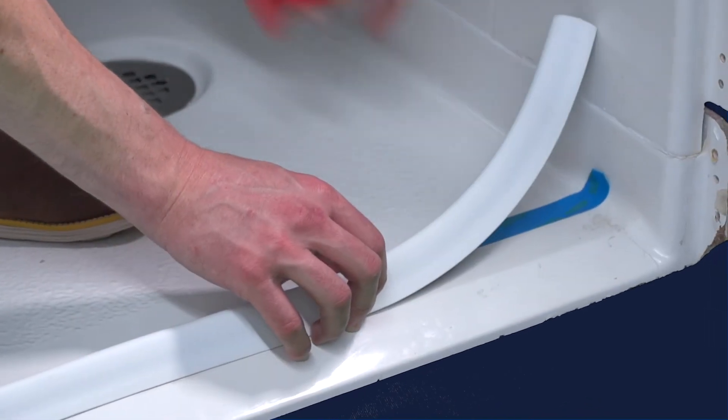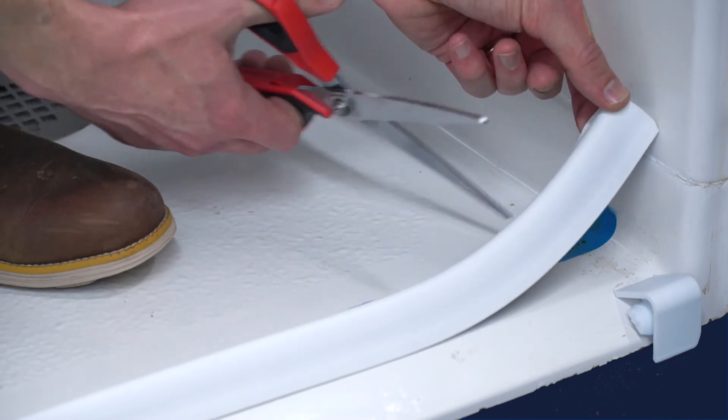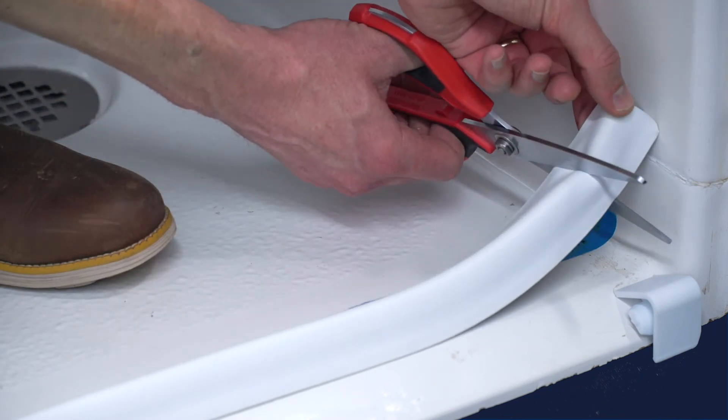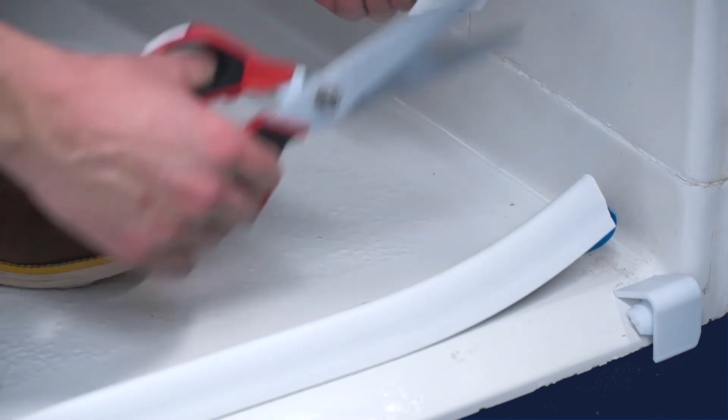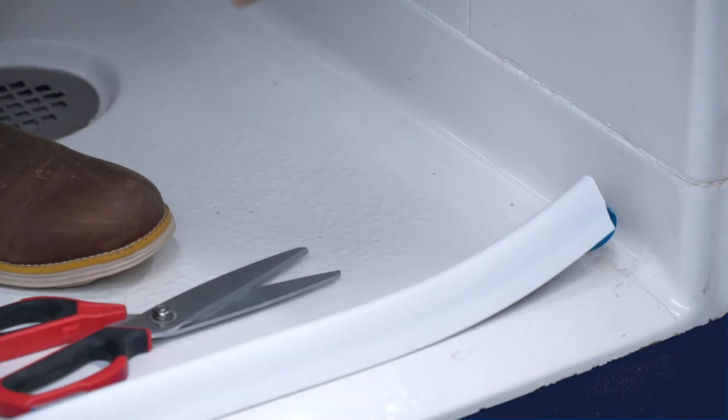Number five, continue until you reach the opposite wall. Number six, cut the dam to create a half-inch gap on both ends in preparation to install the square end caps. Test fit the end cap and adjust your cut if needed for a proper fit.